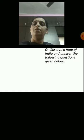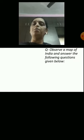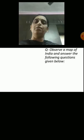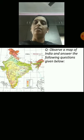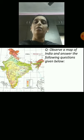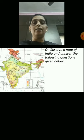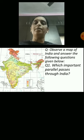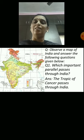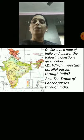Now we are going to observe the map of India and answer the following questions. You might already have an atlas, so if this picture is not clear, you can take your atlas and refer to it. Question 1: Which important parallel passes through India? The answer is the Tropic of Cancer passes through India, which you can see on your right-hand side.